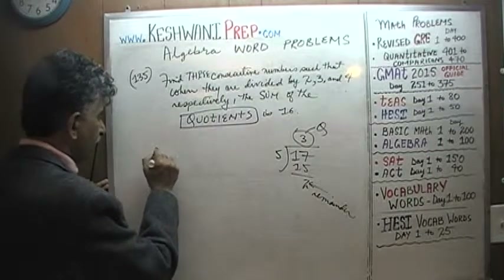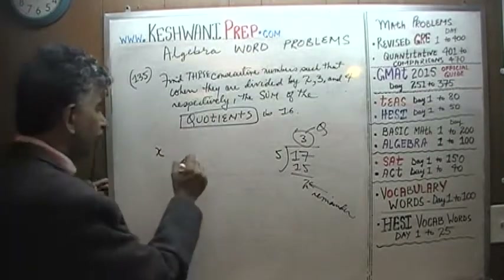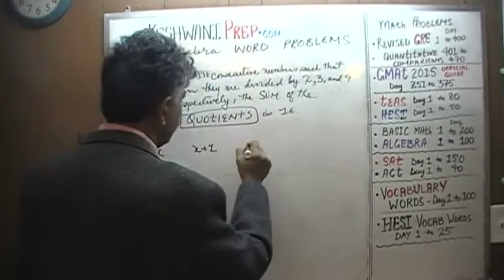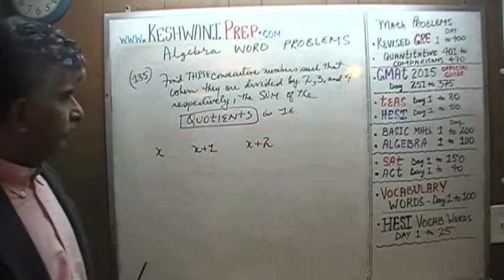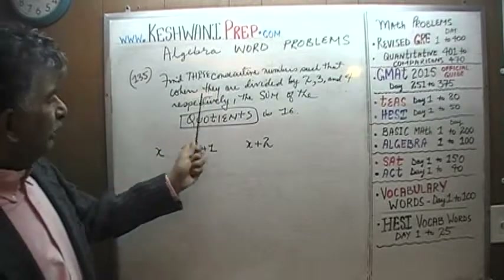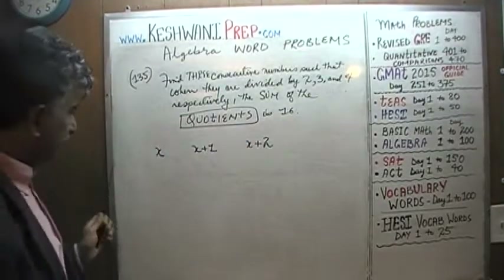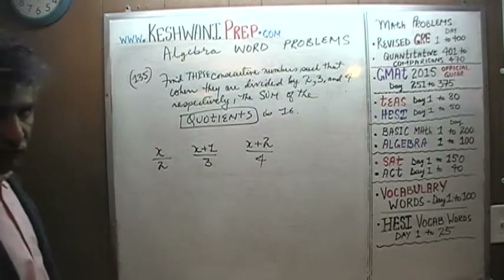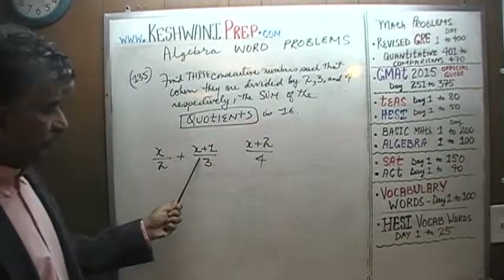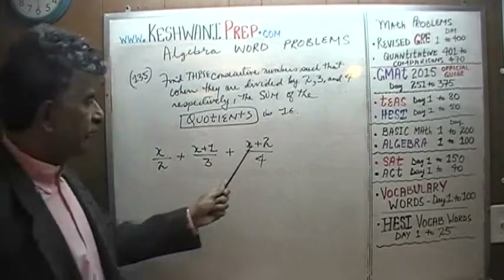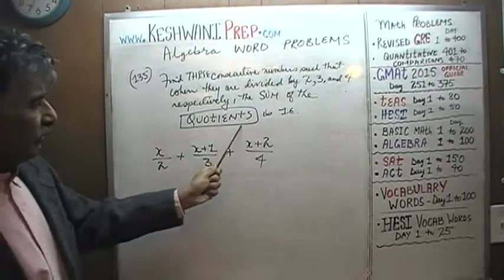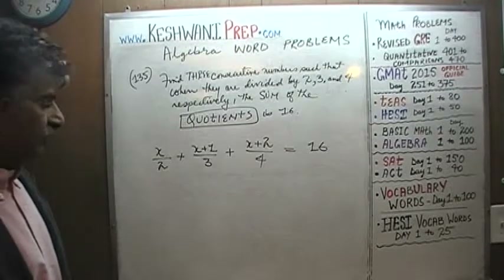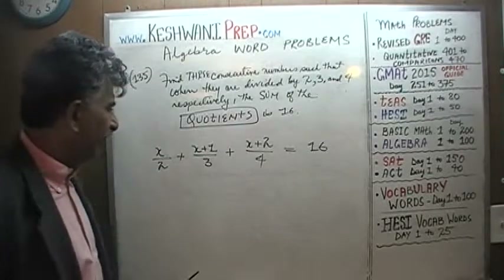So we have three consecutive numbers. Let's call them x. If x is the first one, then the one after that would be x plus one, and the one after that is x plus two. These are our three consecutive numbers if the first one is x. Then it says when we divide these three quantities by two, three, and four respectively — divide x by two, x plus one by three, and x plus two by four — the sum of those quotients is sixteen. There's our equation.